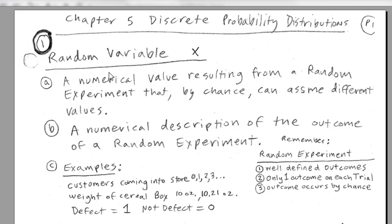Our first term is going to be random variable x. This is a numerical value resulting from a random experiment that by chance can assume different values. Another way to describe a random variable: a numerical description of the outcome of a random experiment. Now, it's a description because sometimes we can have customers coming into a store, so we're counting 0, 1, 2, 3. That's easy to tell it's a number, right?